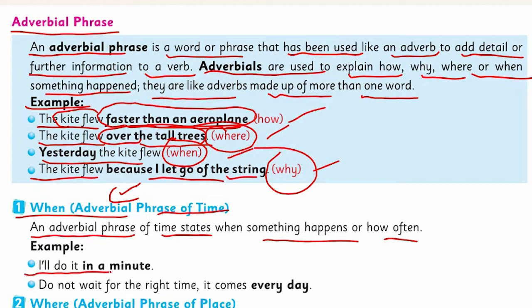For example: 'I will do it in a minute' — 'in a minute' is your adverbial phrase of time, telling you which time or how frequently something will happen. 'Do not wait for the right time, it comes every day.'